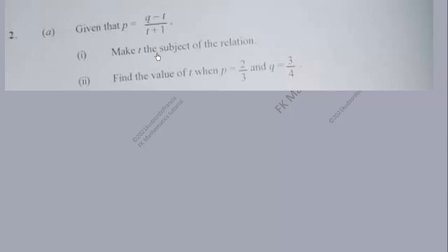Find the value of t when p equals 2 over 3 and q equals 3 over 4. So let's make t the subject first. The given relation is p equals q minus t over t plus one.